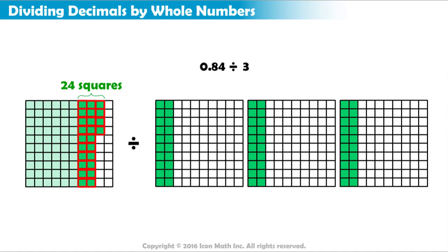Can we evenly distribute these 24 leftover squares into our 3 groups? Yes, 24 is a multiple of 3. Specifically, 8 times 3 equals 24. So we can evenly distribute 24 squares among 3 arrays by giving 8 squares to each.